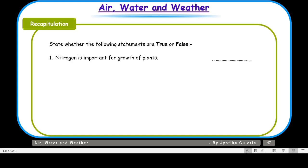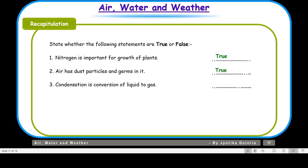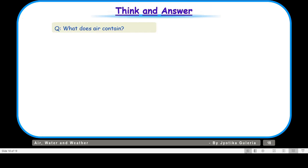Let us move on to the recapitulation section to see what we have understood. Nitrogen is important for growth of plants — that is true. Air has dust particles and germs in it — that is also true. Condensation is conversion of liquid to gas — that is false, because it is the conversion of gas to liquid. Water cycle happens continuously in nature — that is true. Now let us take up the questions: What does air contain? And explain the water cycle. If you have doubts, you can go back to video slides number 3 and 13.